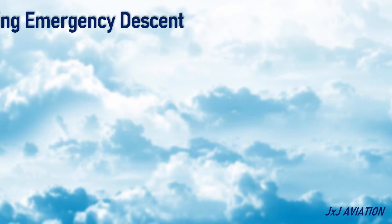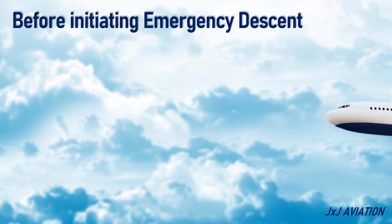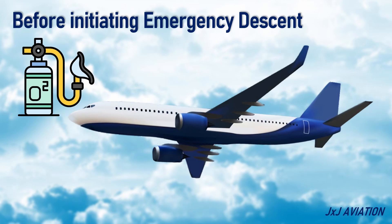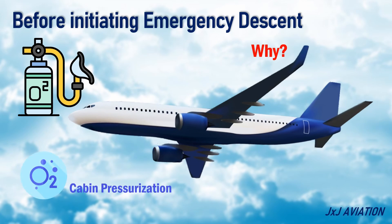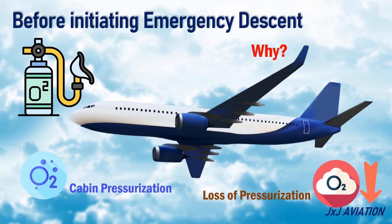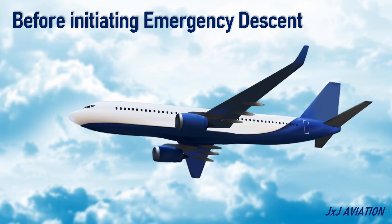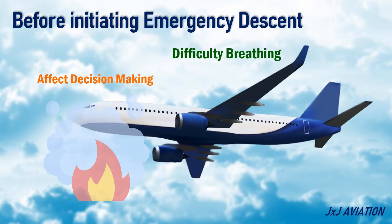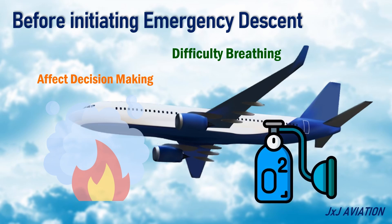Before initiating the emergency descent, in case of cabin depressurization or uncontrollable fire, the crew should don the oxygen masks. Cabin pressurization ensures sufficient oxygen is available even at higher altitudes. In case of loss of pressurization, the oxygen available inside the aircraft reduces, which can lead to hypoxia. Similarly, smoke or fire inside an aircraft can cause difficulty in breathing, which can affect the decision-making process of the flight crew. So the first step of donning the oxygen masks becomes crucial.